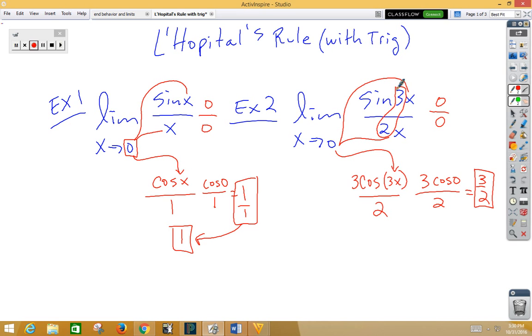And over here we have an implied 1 as our coefficients there. So there is a shortcut for L'Hopital's rule with limits with trig.